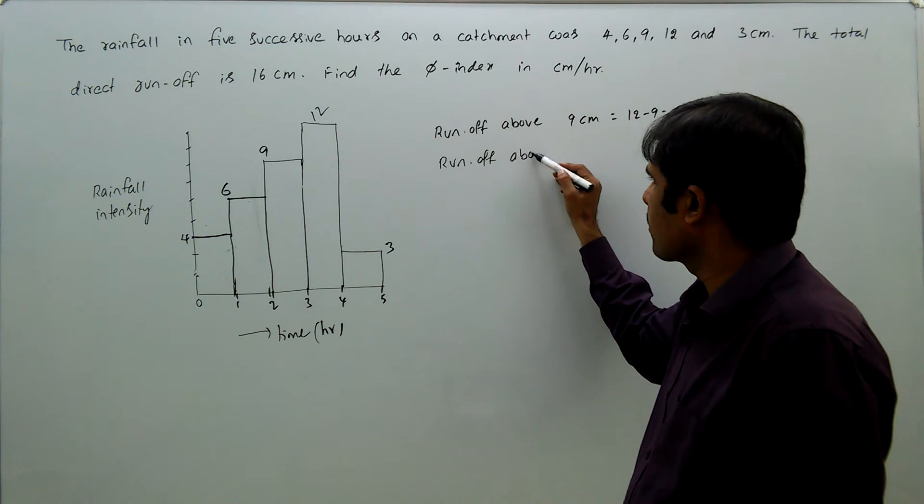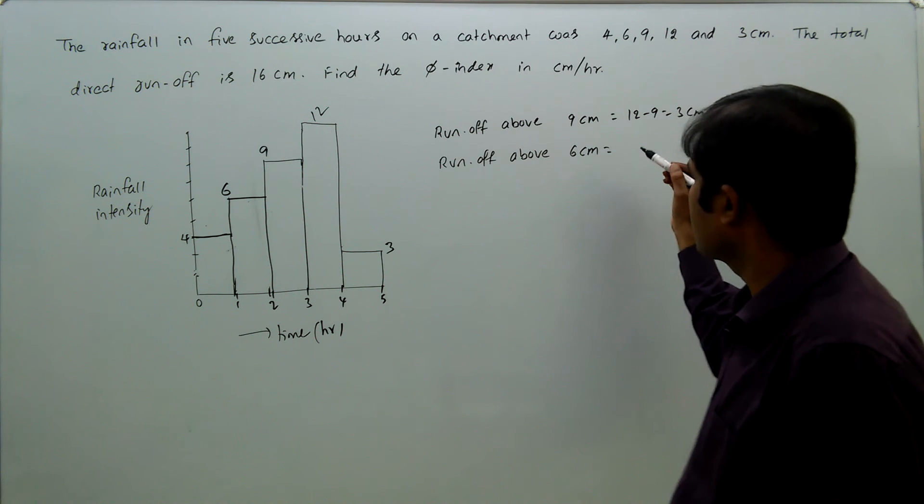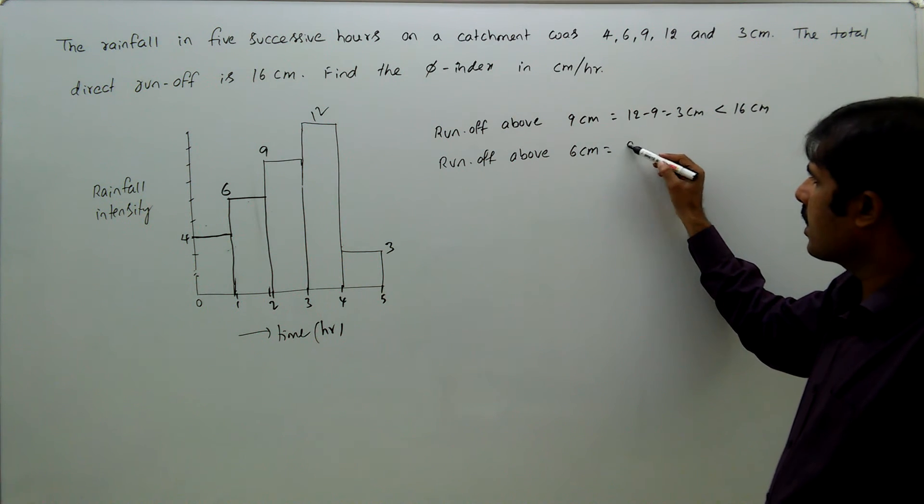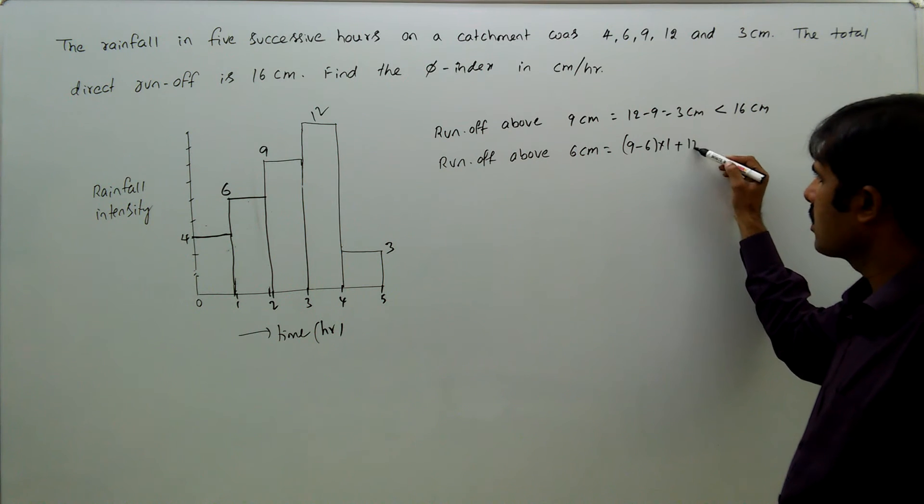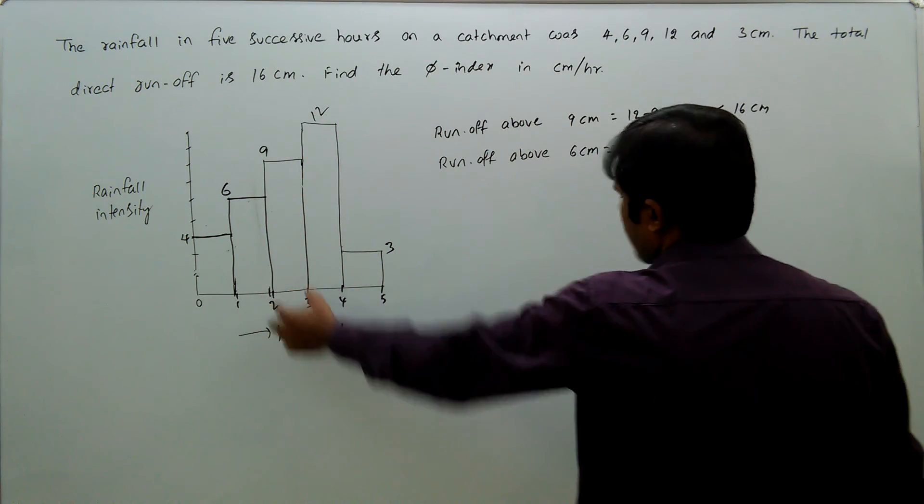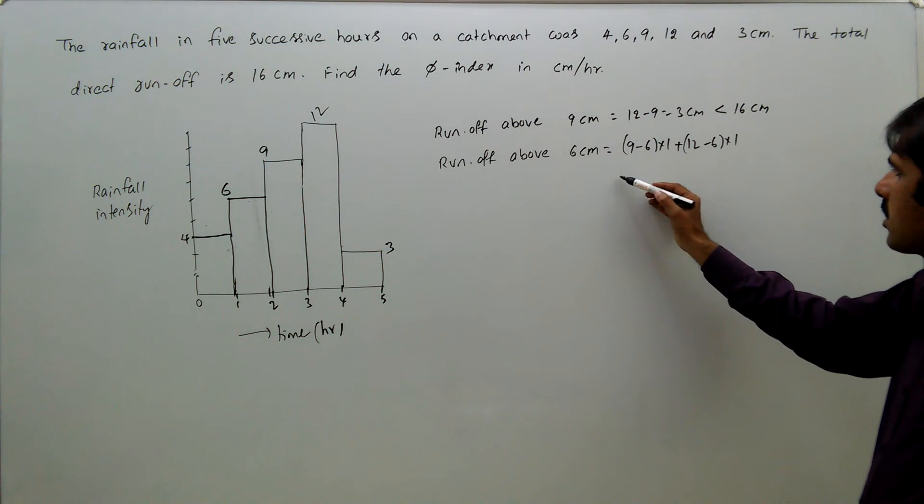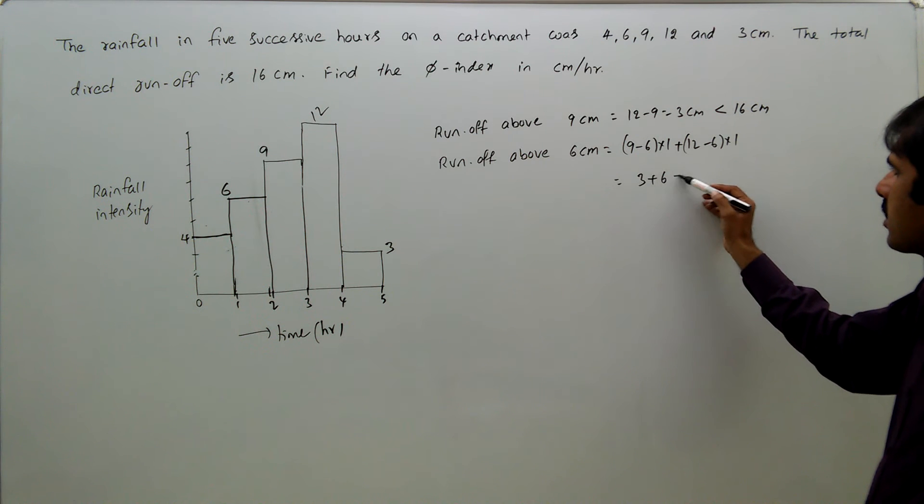Runoff above 6 cm level, that is equal to 9 minus 6 into 1, plus 12 minus 6 into 1, because the width is 1. 9 minus 6 plus 12 minus 6, that is equal to 3 plus 6, that is equal to 9 cm.